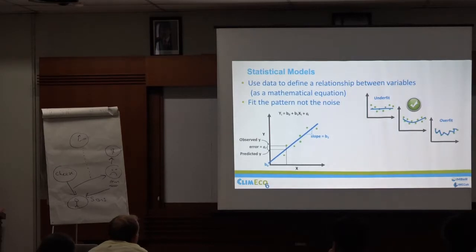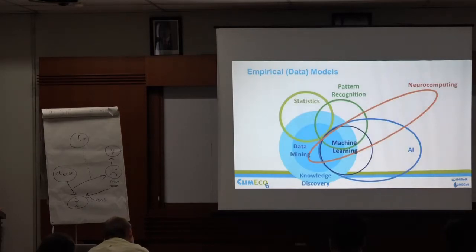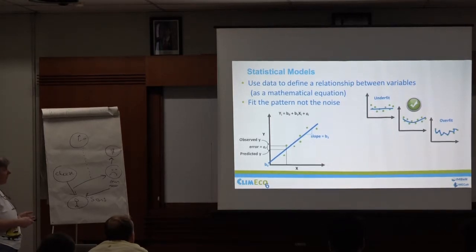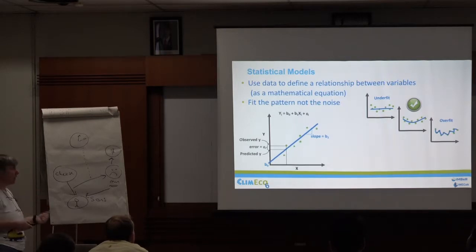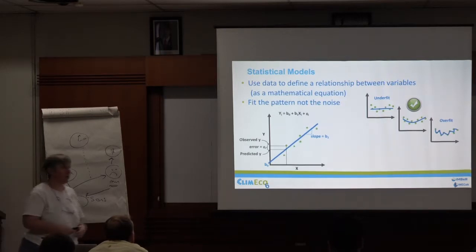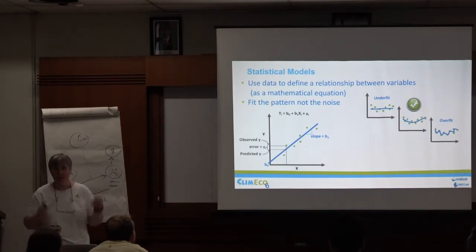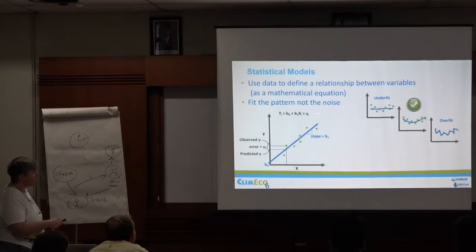In the classical methods, you have a set of data and you're trying to fit a simple model to it — an explanation that's close enough. In Australia it's called 'good enough for government work': close enough that you get about the right answer without having to be super precise. That's what a statistical model is — a simple relationship between observations and the different variables.